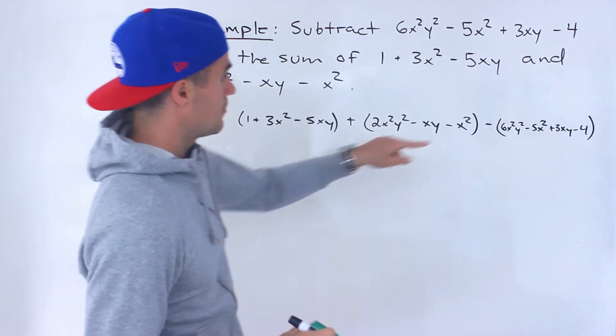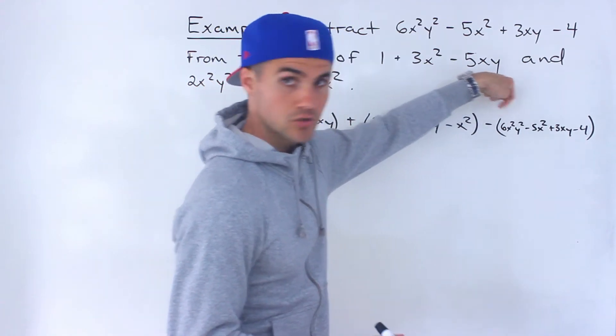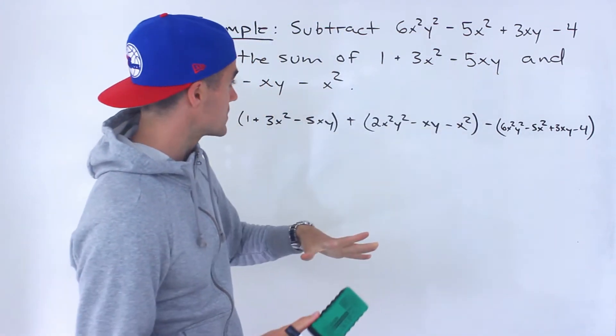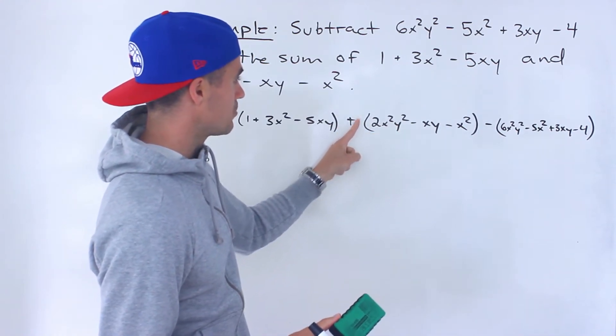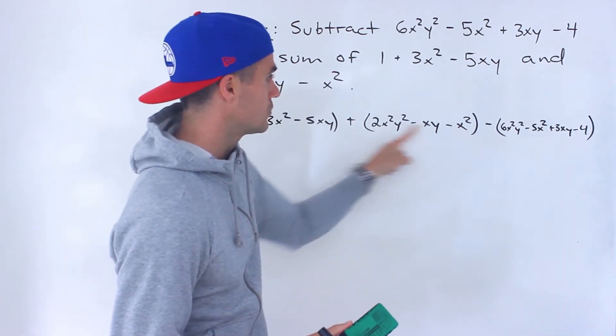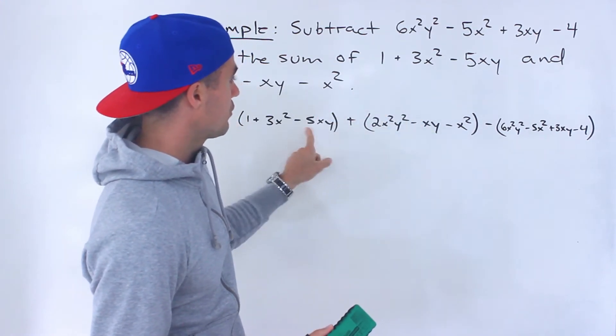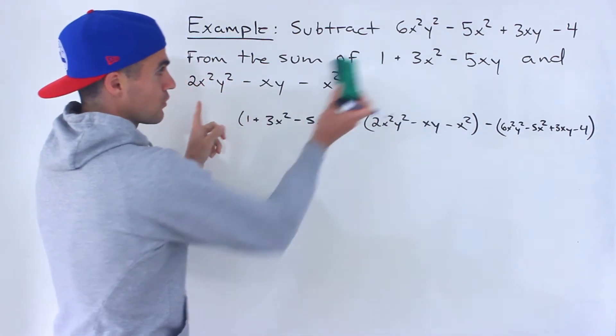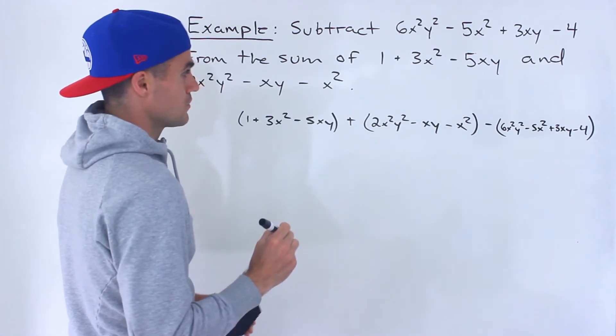So putting this in brackets is super important because that minus, when we distribute it in the brackets, it's going to change all the signs. Putting these in brackets, not as important because there's just a plus 1 in front, so no signs are going to change here or no coefficients either.